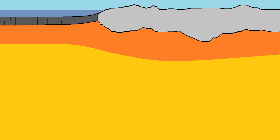First off, there are two different basic types of crust found on the earth. In the oceans, we have oceanic crust, which is basaltic in composition and has a higher density, and on land, the part we live on, we have the continental crust, which is granitic in composition and has less of a density than oceanic crust.